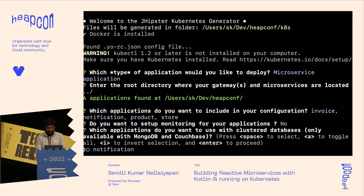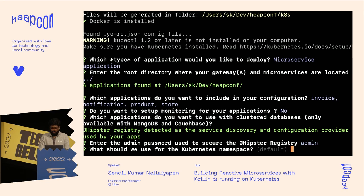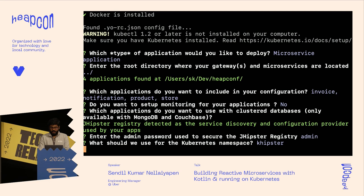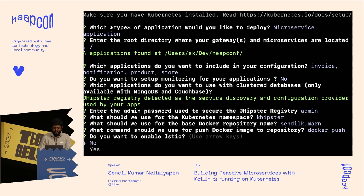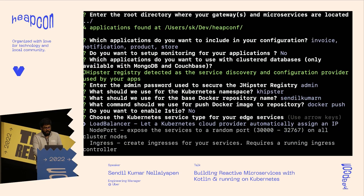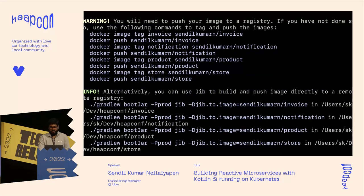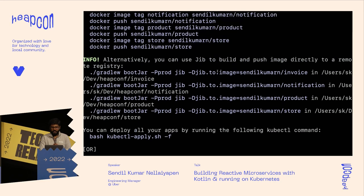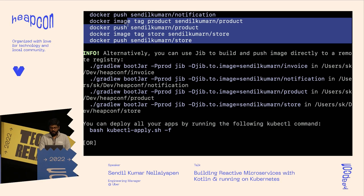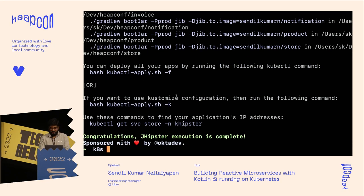It asks whether I want monitoring — I say no for this demo. It detected MongoDB in my application and asked about cluster database — I say no. Then it asks for the namespace, Docker repository name, whether to enable Istio — no for this demo — and the service type: load balancer (gives an IP), node port (random port), or ingress (recommended for production). I choose load balancer, and it generates all the files with a list of instructions.